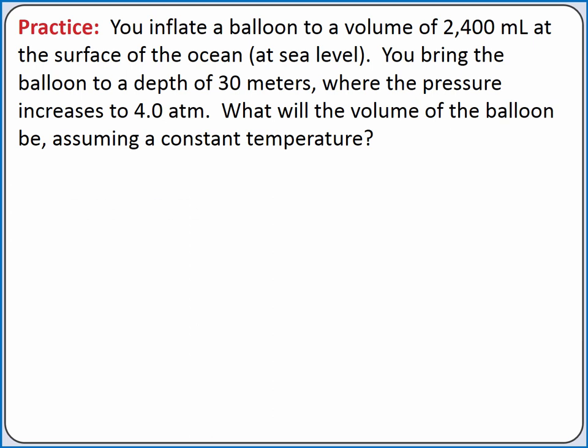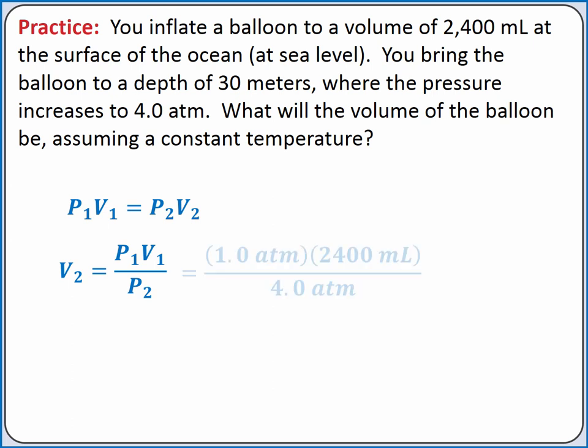We'll start with the equation P1V1 equals P2V2. We want to rearrange this equation to solve for V2, which equals P1V1 over P2. At sea level, the pressure should be 1 atmosphere, and the volume of the balloon is 2400 milliliters.